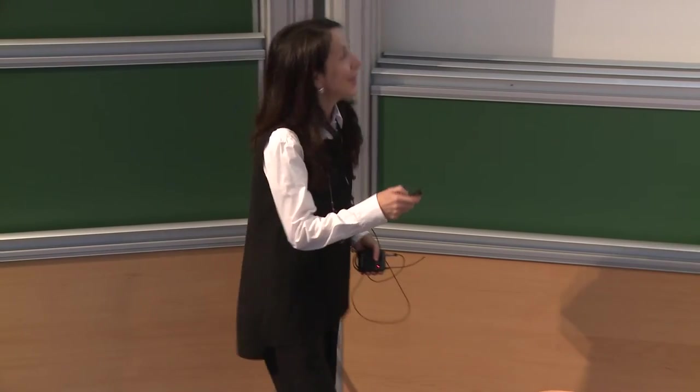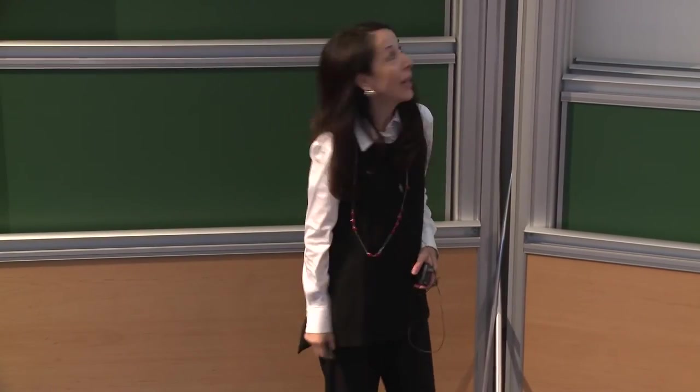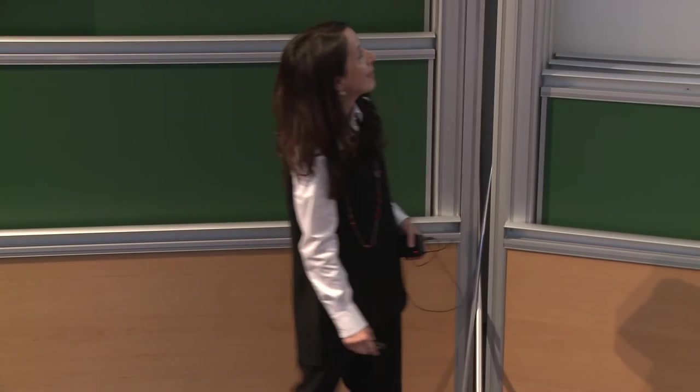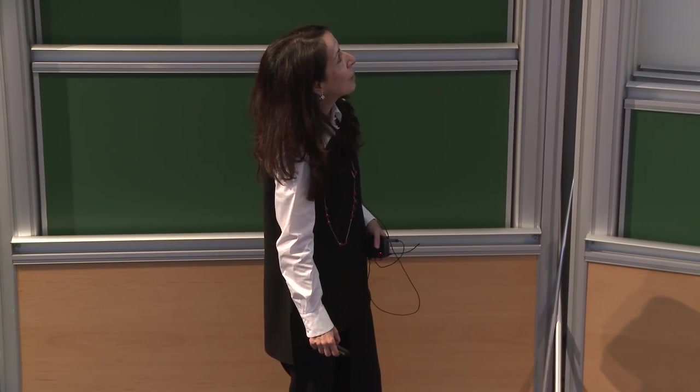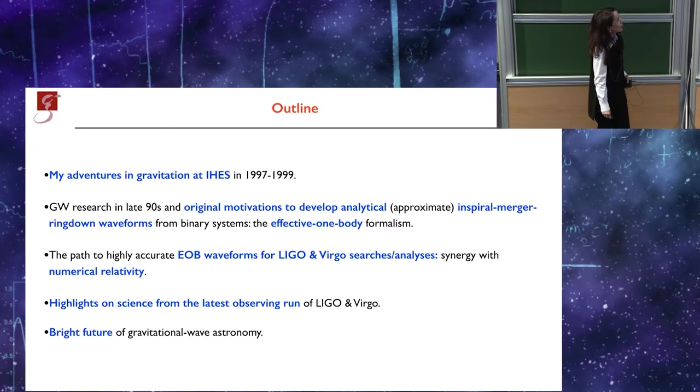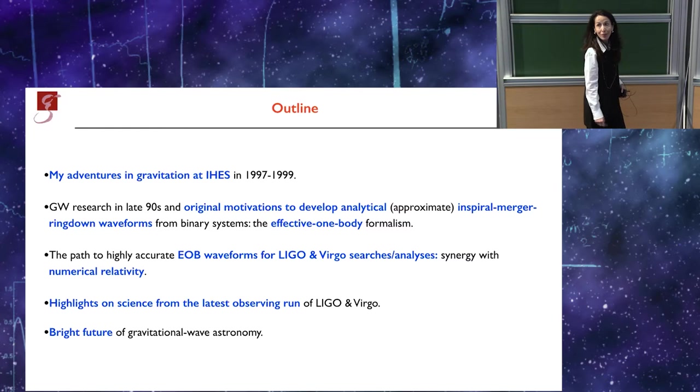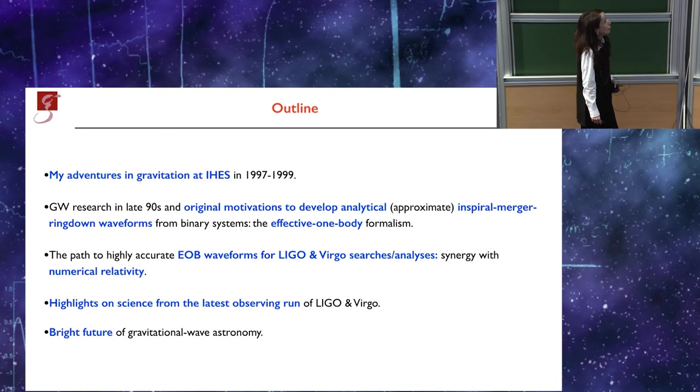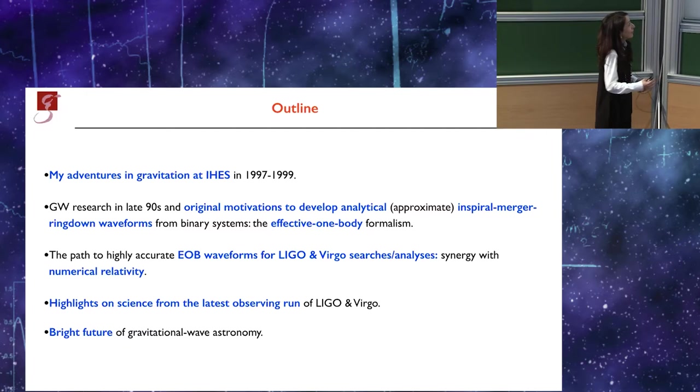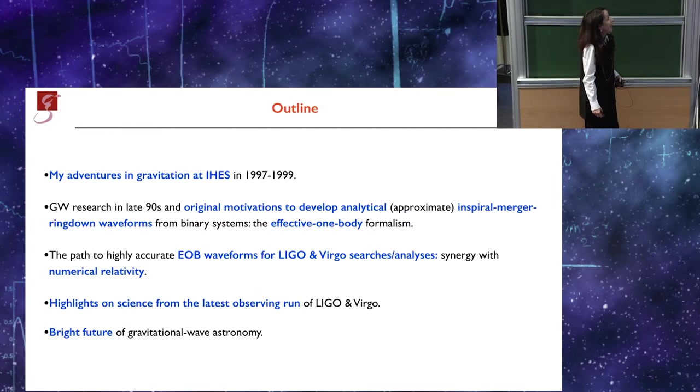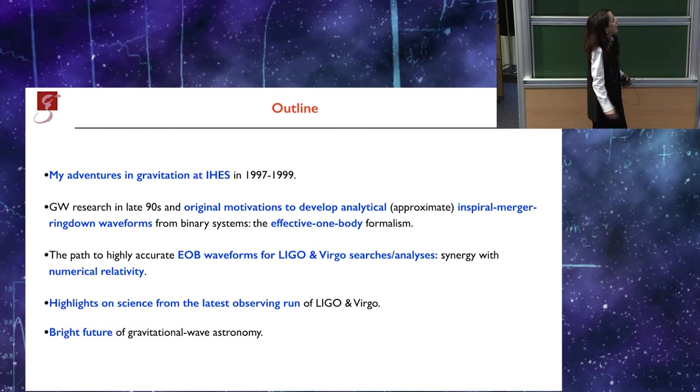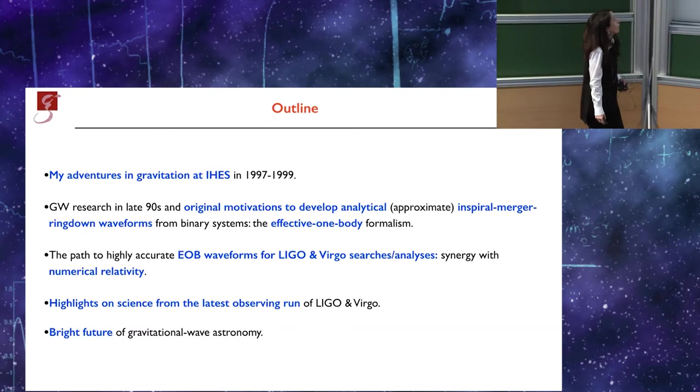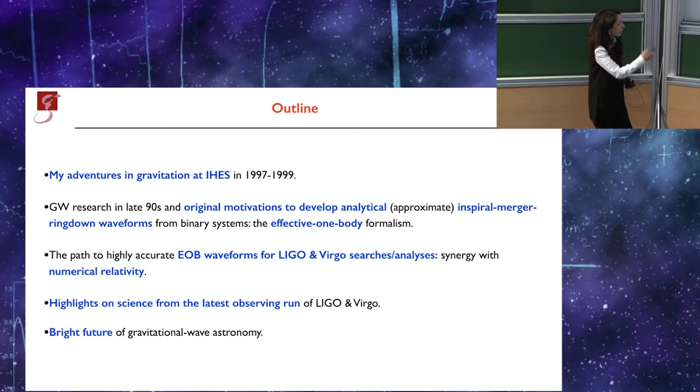I'm very happy to be here to celebrate Thibault. So this is a brief outline of my presentation. I will start by briefly reviewing my adventures in gravitation at AGS during the time I was a postdoc here. I will discuss the original motivation to develop the effective one-body formalism and then the path over several years to build EOB waveforms that could be used for searches and also for inference studies by LIGO and Virgo. In the second part of my presentation, I will highlight how these waveforms have been used and the science that they have enabled, in particular focusing on the latest observing run by LIGO and Virgo.